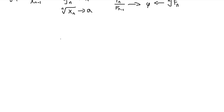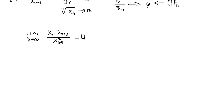Now I'll solve a problem using this form of Stoltz-Cesàro. We're given a sequence x_n, and we're told that the limit as n goes to infinity of x_n · x_{n+2} / x_{n+1}^2 is 4. We want to find what the n²-th root of x_n approaches.